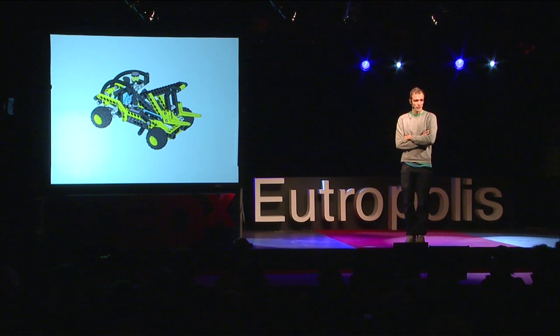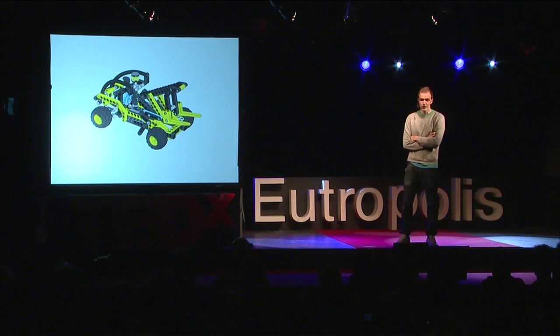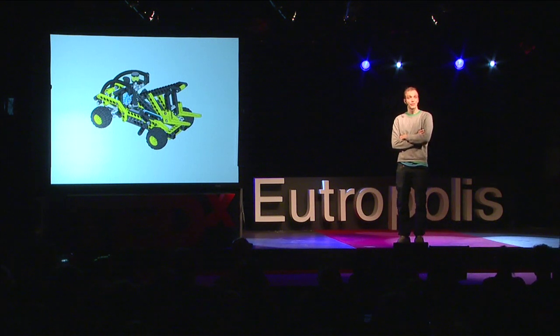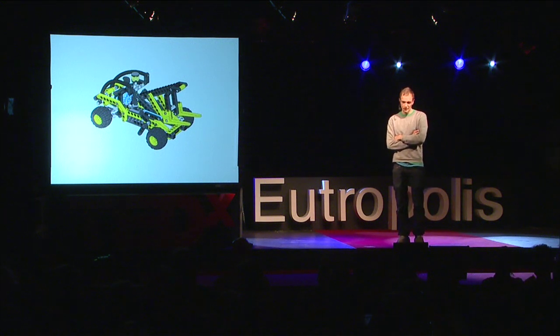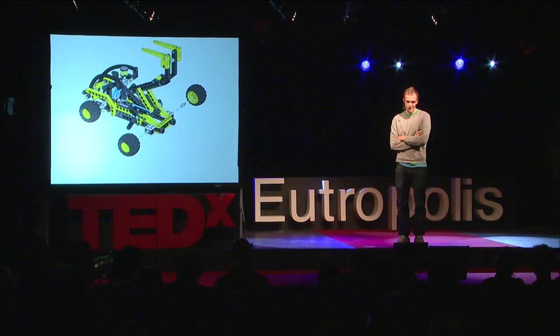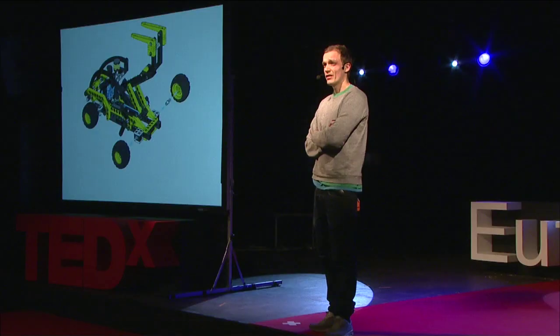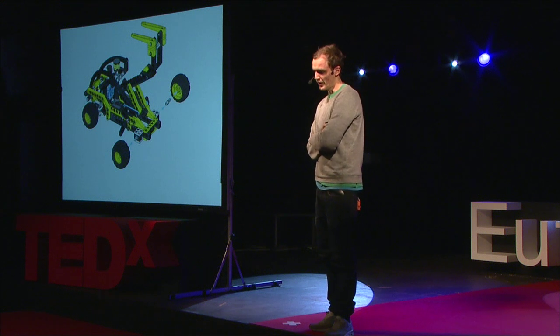A Lego car is a bunch of Lego parts that have been assembled and that form a car. But that's just the beginning, and every kid knows that. A Lego car has the ability to grow, to adapt itself, and to evolve over time. Modular designs are designs that incorporate time in their design, and that's what makes them resilient and adaptable to change.